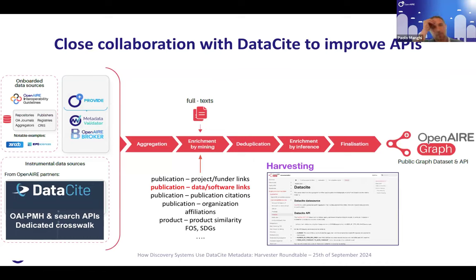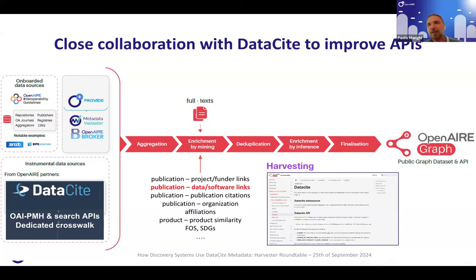This is the chain of data provision. We have many data sources providing us metadata. We've designed OpenAIRE guidelines — metadata standards implemented by several platforms — so thousands of sources are compatible. For custom data sources like DataCite, we collect via OAI-PMH and the APIs, and we recently experimented with the dump for bootstrapping and periodic refresh. We aggregate the data, enrich it with mining and AI tools — for example, inferring links between publications, data, and software — deduplicate records so merged entities have one stable identifier, enrich further with inference exploiting graph relationships, and finalize the data. Everything is described in the documentation.